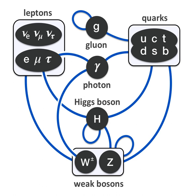The development of the Standard Model was driven by theoretical and experimental particle physicists alike. For theorists, the Standard Model is a paradigm of a quantum field theory, which exhibits a wide range of physics including spontaneous symmetry breaking, anomalies, and non-perturbative behavior. It is used as a basis for building more exotic models that incorporate hypothetical particles, extra dimensions, and elaborate symmetries in an attempt to explain experimental results at variance with the Standard Model, such as the existence of dark matter and neutrino oscillations.